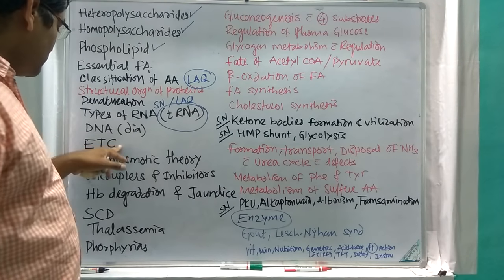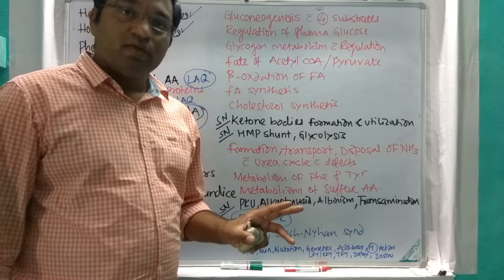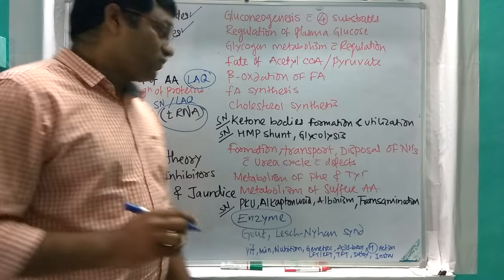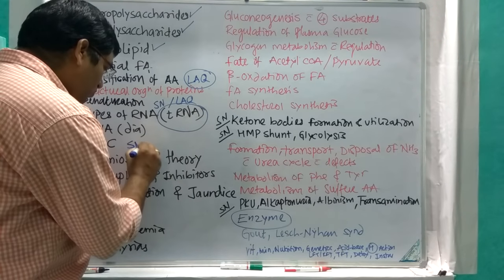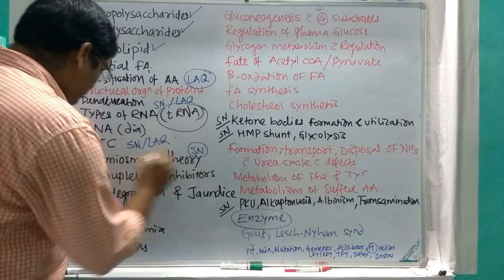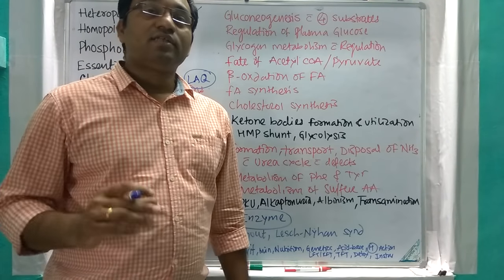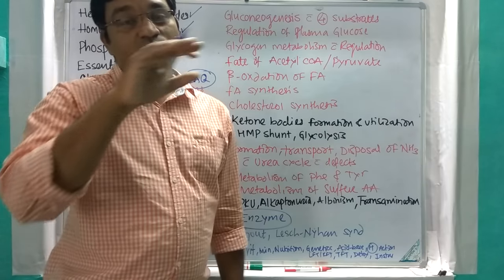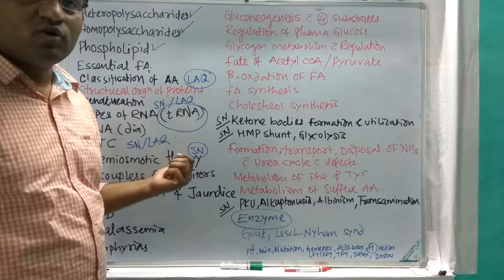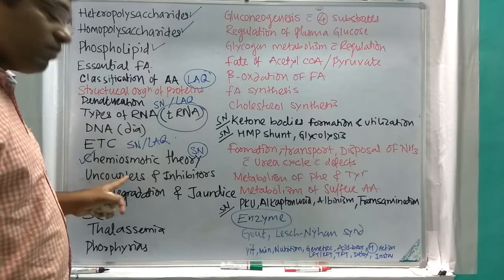In biological oxidation, the electron transport chain is very very important — it is both a short note and a part of long answer questions. The chemiosmotic hypothesis is also a very important short note: how a proton gradient develops and how this proton gradient is responsible for generation of ATP, as described by the chemiosmotic theory.